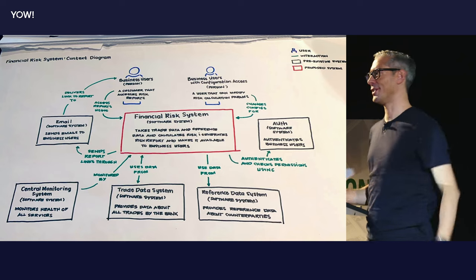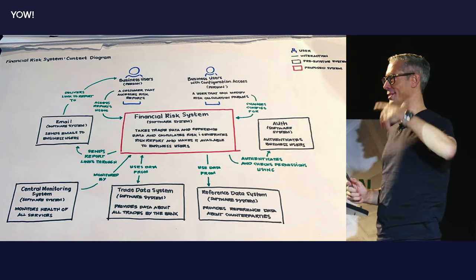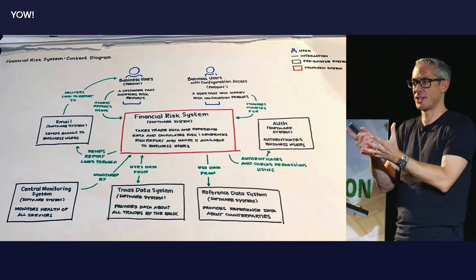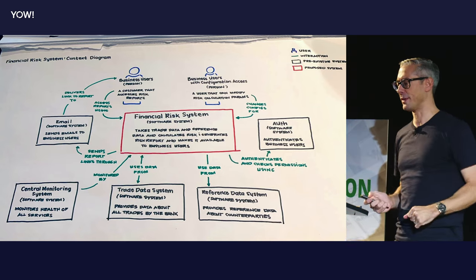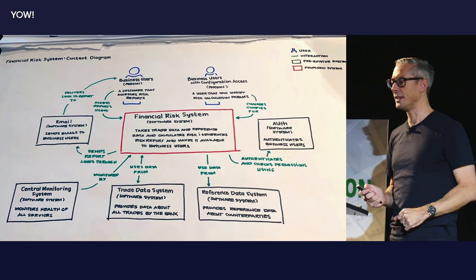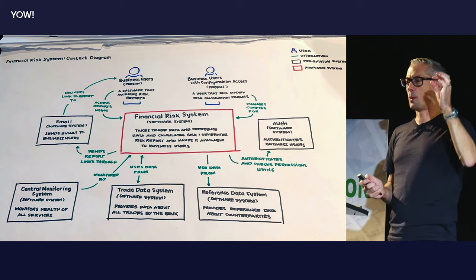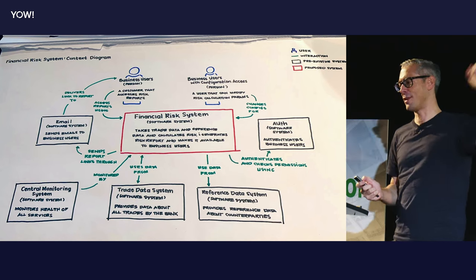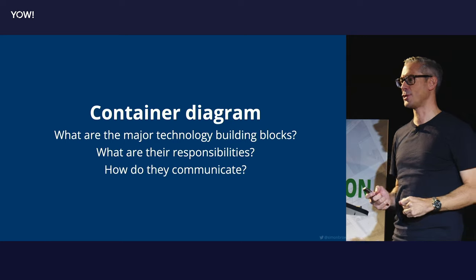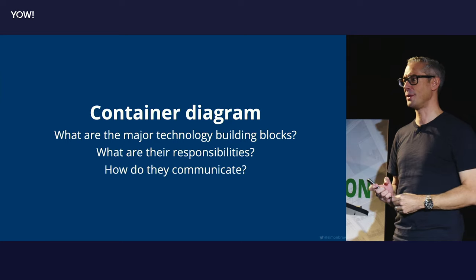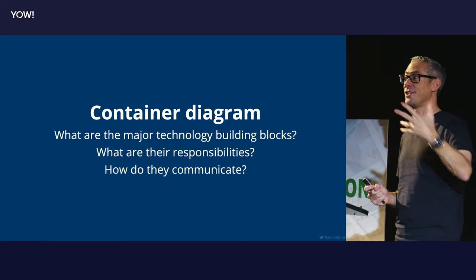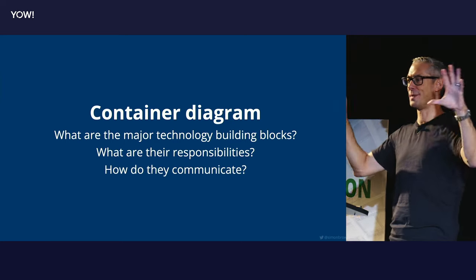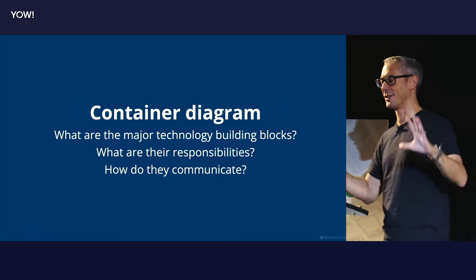You'll notice in the corner there's a nice diagram key. There's lots of text on here — it's a nice, understandable diagram. So now we do the Google Maps pinch to zoom into that red box and drop down to level two. Level two is a container diagram — again, not Docker, I'm sorry. I got the name first.